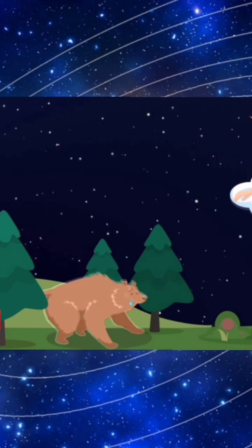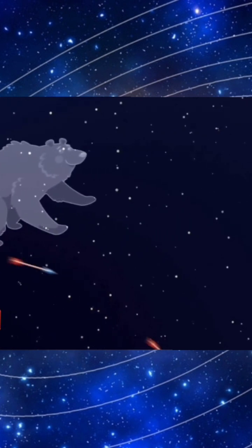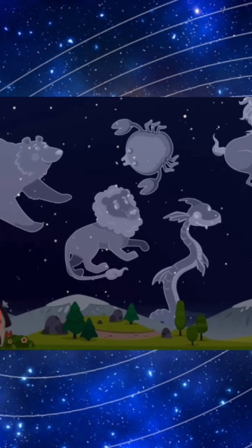When Zeus found out about it, he put her up into the sky to save her from hunters. Besides Ursa Major, there are 87 other constellations.